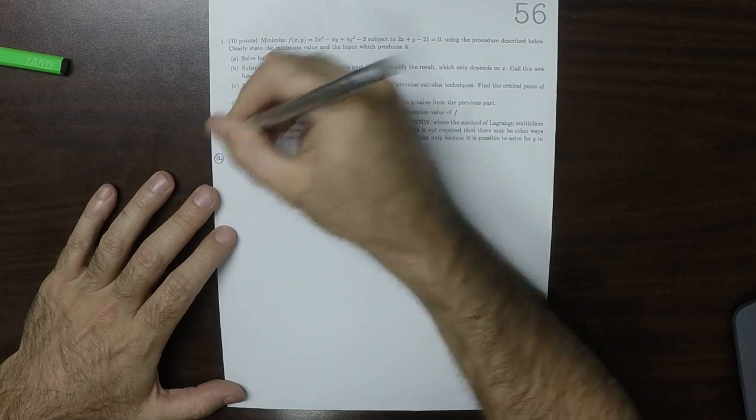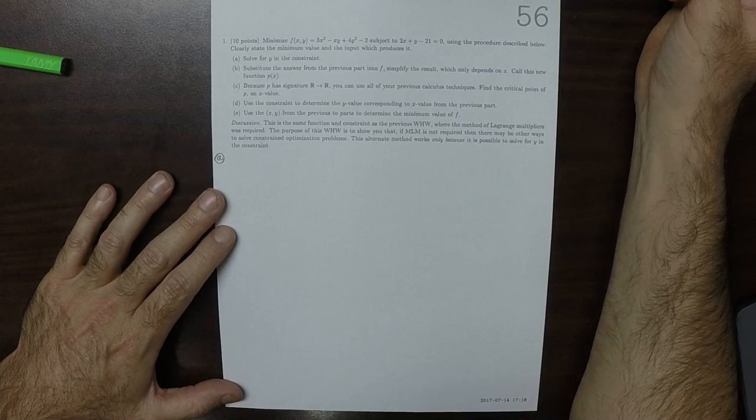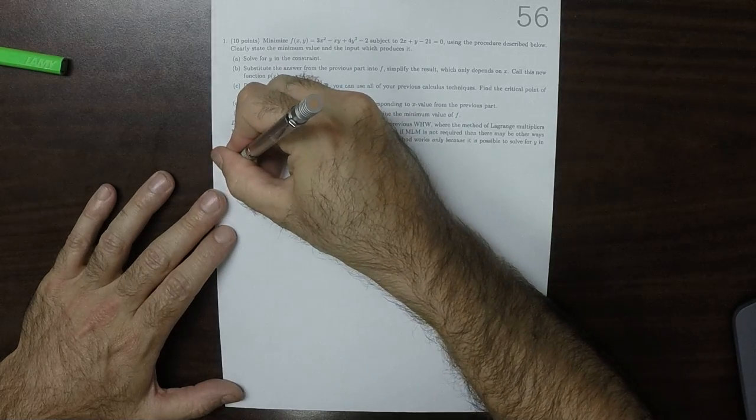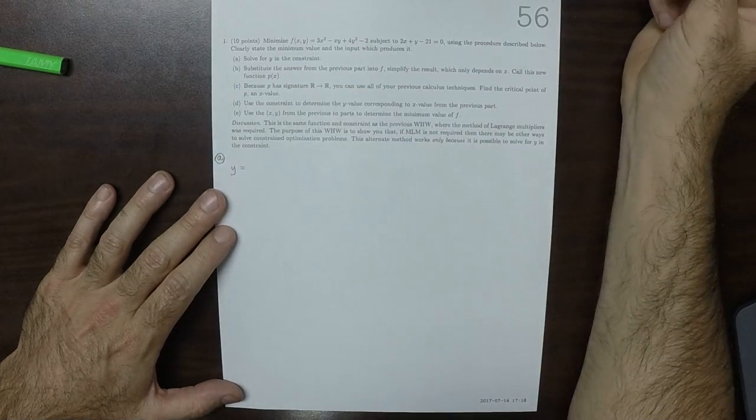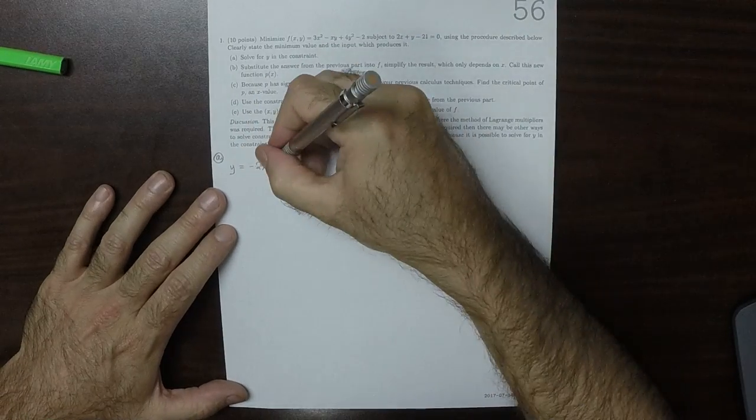So from part A, it says solve for y in the constraint. That's straightforward enough. That's y is negative 2x plus 21.